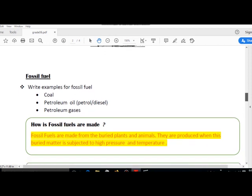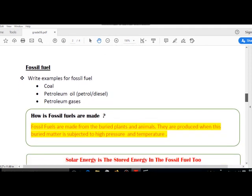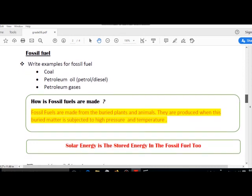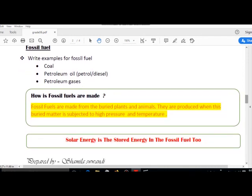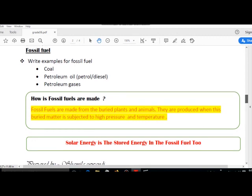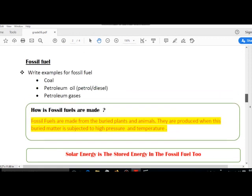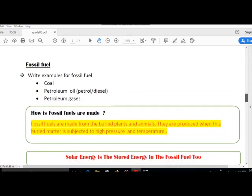Fossil fuel: Write examples for fossil fuel. Fossil fuel can be divided into three parts: Coal, petroleum oil, and petroleum gases.